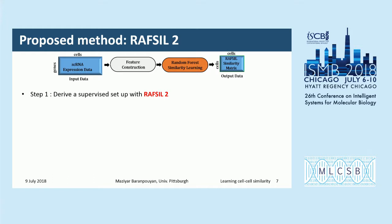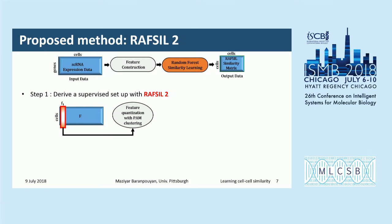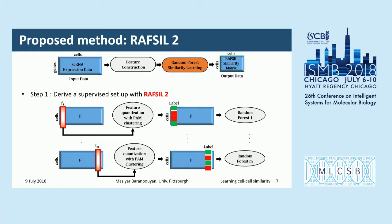We also propose our own method, RAFSIL-2, which does not require any secondary, synthetic, or shuffled dataset. First, after selecting a single feature, we quantize its values using partition around medoids clustering, where the silhouette metric is used to automatically estimate the number of quantization parts. Using this approach, we derive cell labels, replace the corresponding feature with the extracted cell labels, and then train a random forest to predict those cell labels using the reduced feature set. We repeat this for all features, so with m features we generate m different random forests.